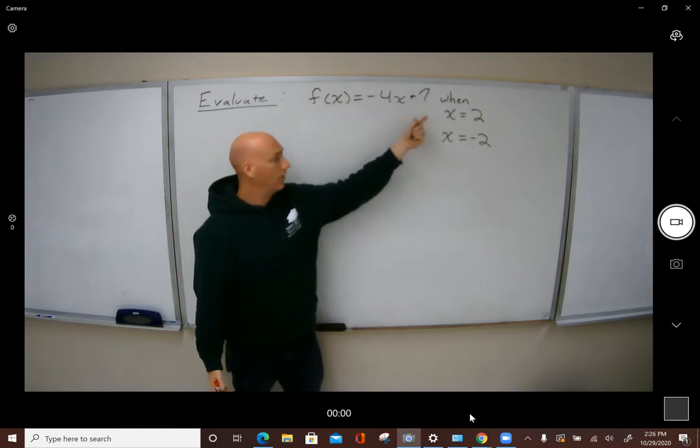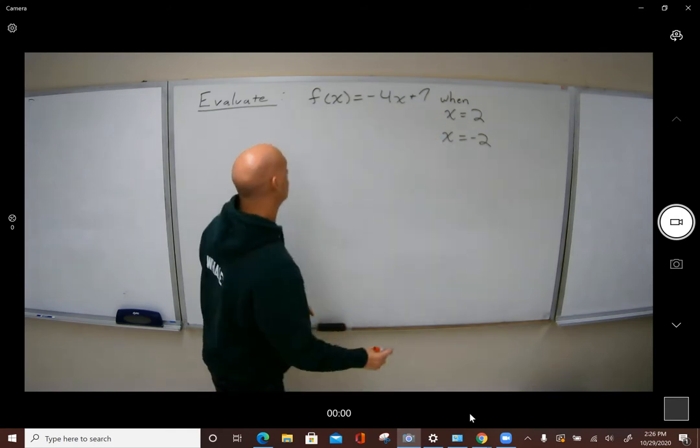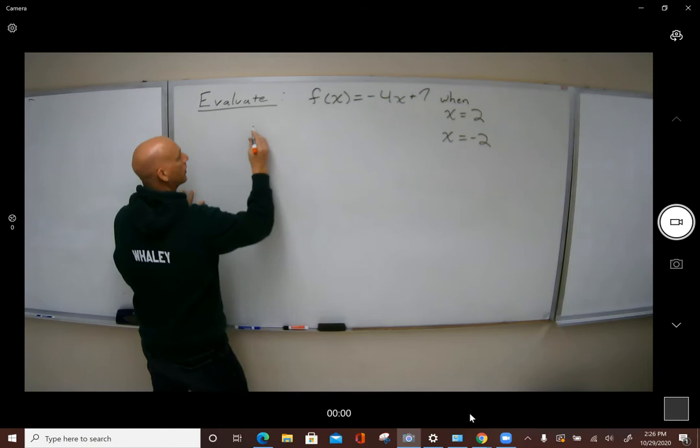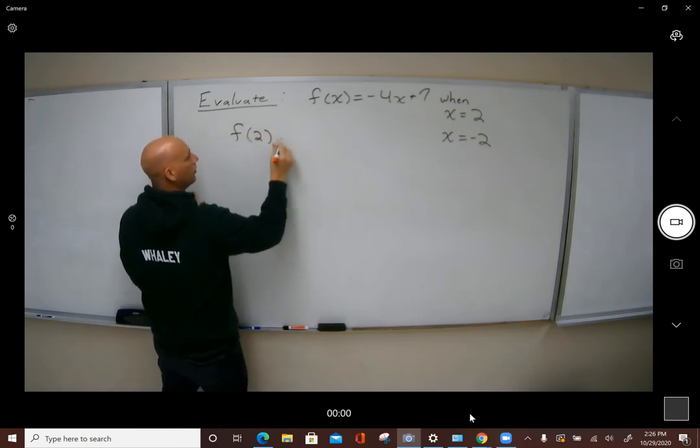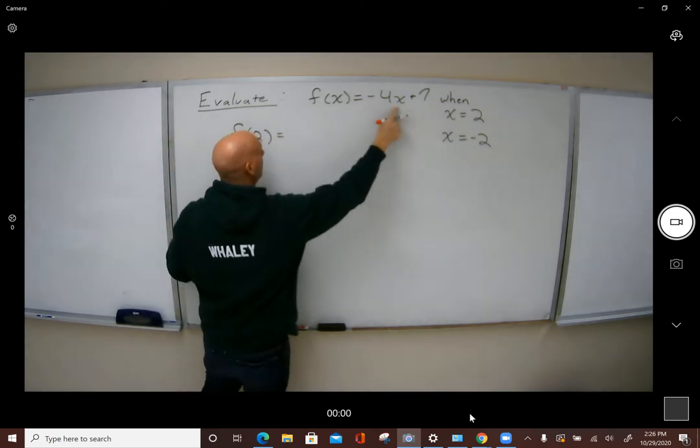These are our two specific examples we want to see. So for the first part, we're going to do f of 2. Notice I substituted 2 in for an x here, so I substituted in over here: negative 4 times 2 plus 7.